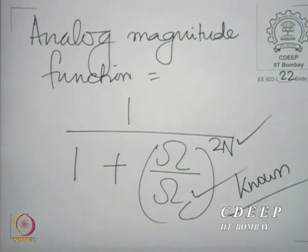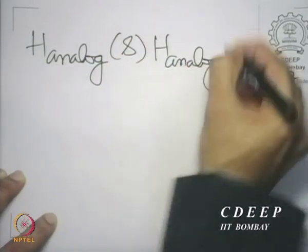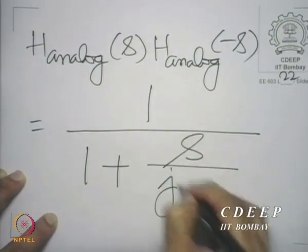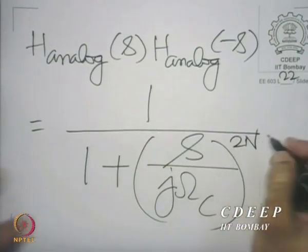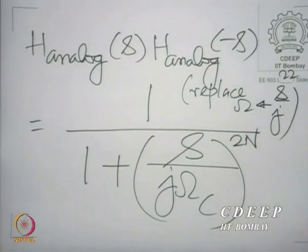We need to complete the design by identifying H_analog(s). Once we know n and omega_c, we know H_analog(s) · H_analog(−s), which is 1 divided by [1 + (s / j·omega_c)^(2n)]. We obtain the analog system function by replacing omega with s/j, since s = j·omega on the imaginary axis. When we find the frequency response, we replace s by j·omega, so to go back to the system function, we replace omega by s/j.